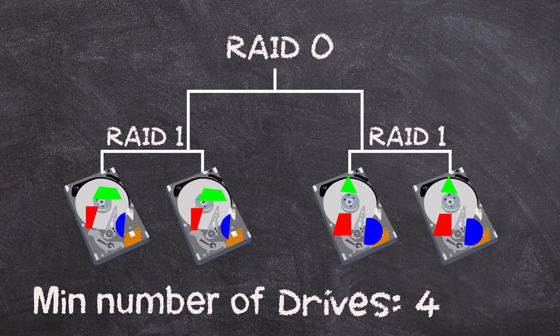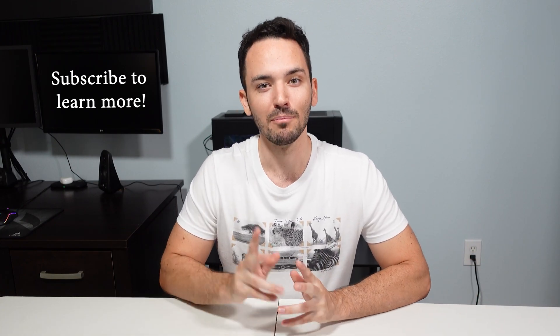You still lose half your storage to mirroring, but in RAID 10 you don't have to write any parity data, so your write speeds are much faster. Whereas RAID 5 has to gather data from all drives and reconstruct corrupted data — which takes time — RAID 1+0 can just mirror the data and copy it straight over, making it a faster solution for rebuilding. RAID 10 can offer up to twice the speed of RAID 5, though the trade-off is losing half your storage to the mirroring effect.